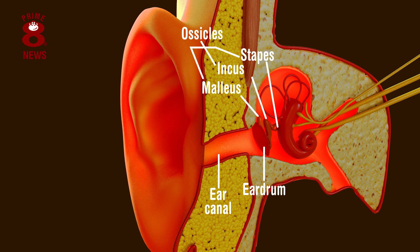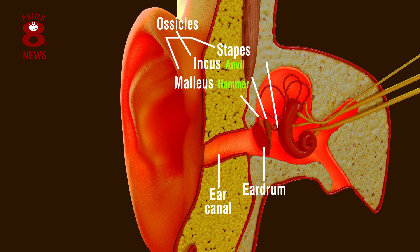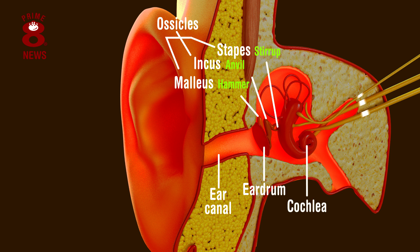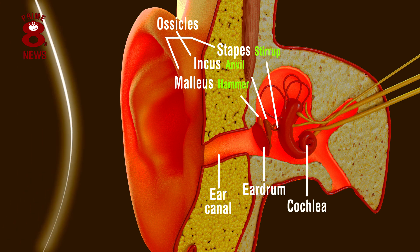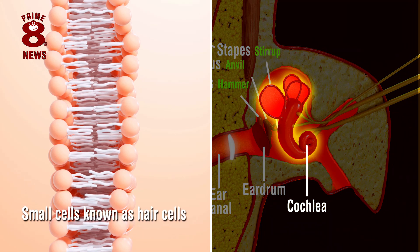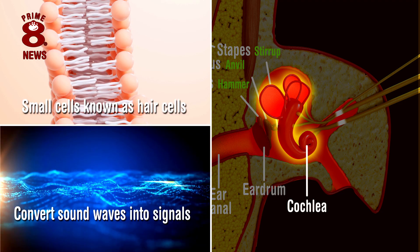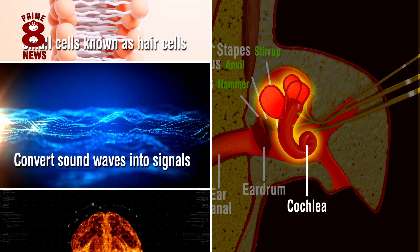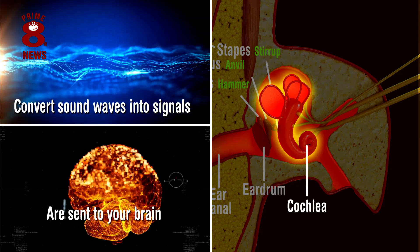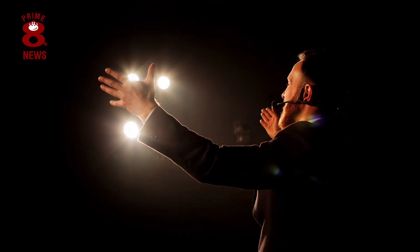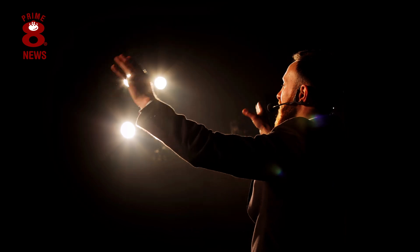the incus and the stapes. They also have easier names to remember: the hammer, the anvil and the stirrup. The vibrating ossicles then transmit the sound waves to the cochlea, a small snail-shaped structure inside your head. Your cochlea contains small cells, known as hair cells, that convert sound waves into signals. And it is these signals that are sent to your brain, and then you get to hear someone's voice, just like me.